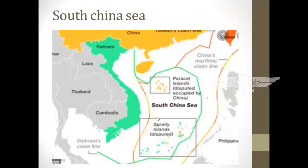The next section is a map-based study of the South China Sea, which is currently in the news. The South China Sea is an arm of the western Pacific Ocean in Southeast Asia — south of China, east and south of Vietnam, west of the Philippines, and north of the island of Borneo. Going clockwise, the bordering states and territories are China, Taiwan, Philippines, Malaysia, Brunei, Indonesia, Singapore, and Vietnam. It has connections with the East China Sea via the Taiwan Strait and with the Philippine Sea via the Luzon Strait.